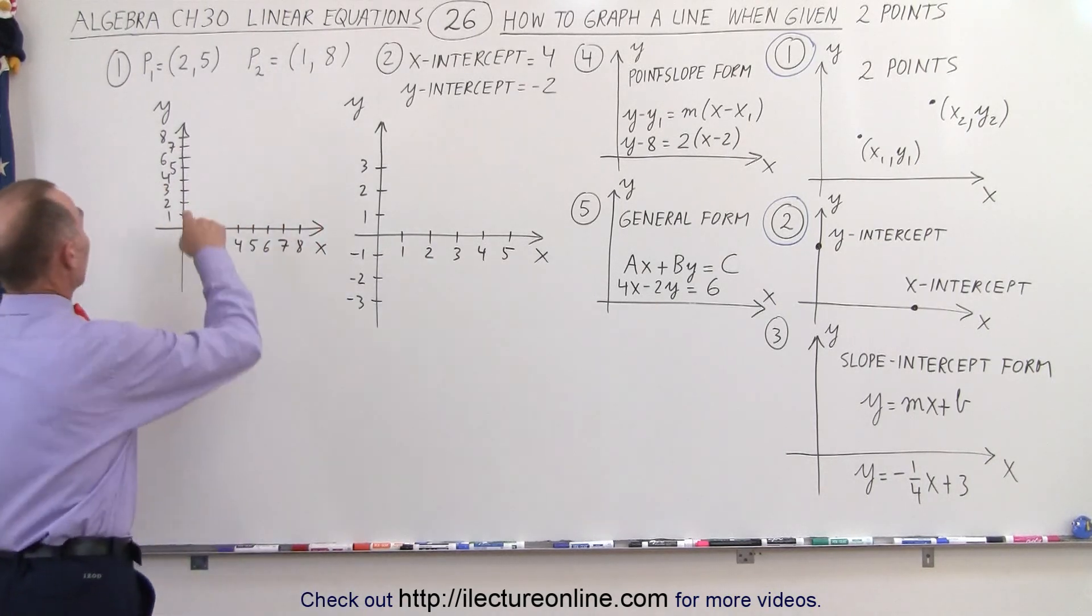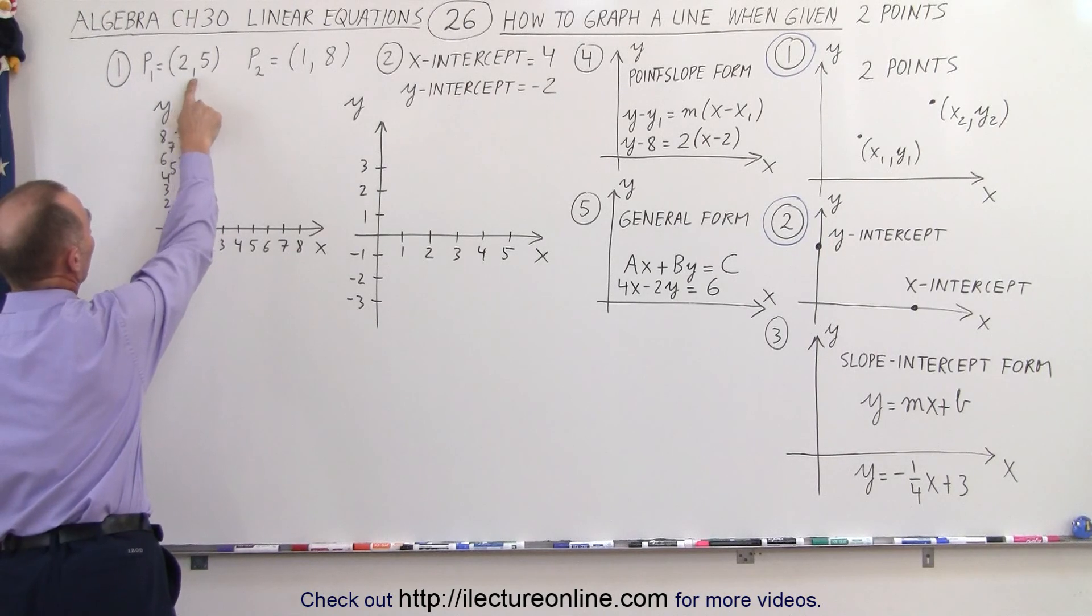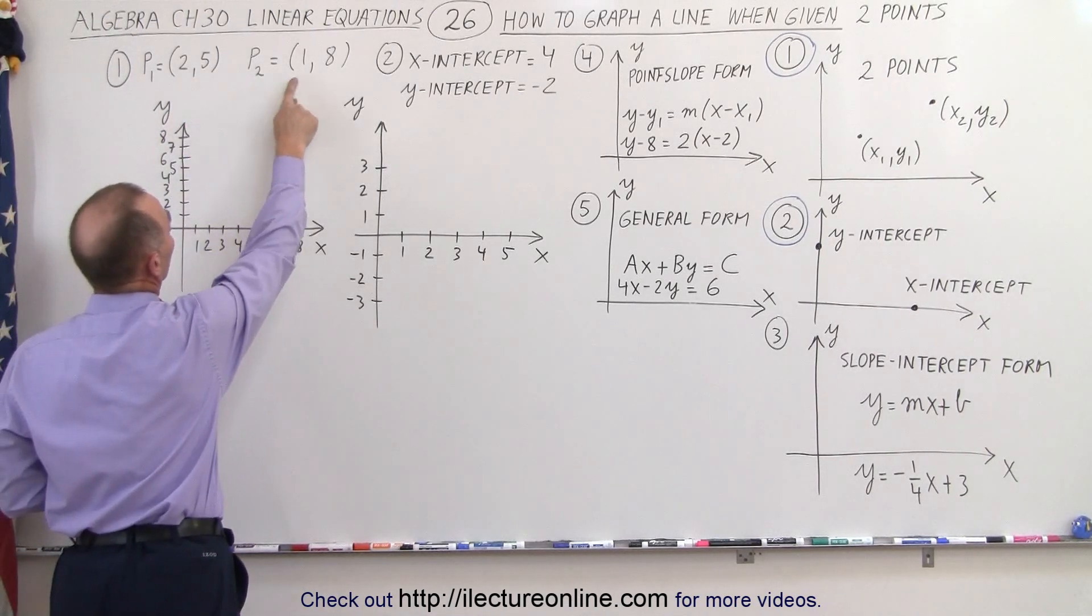So here we have an example where a point is given, 2 and 5, that's an x and y coordinate, and a second point is given, 1 and 8.